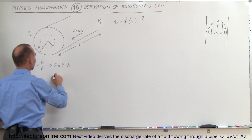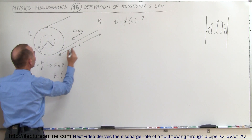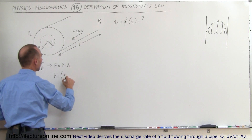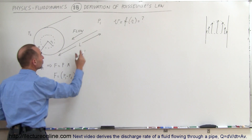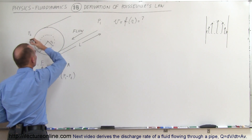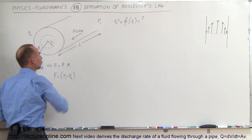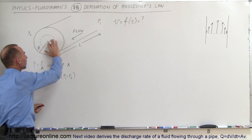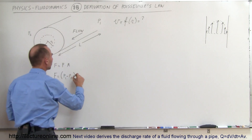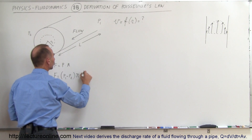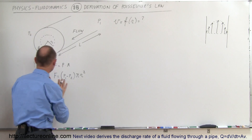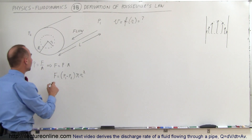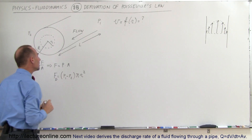We can say that the driving force is equal to the difference in the pressures, P1 minus P2 — because we assume P1 has higher pressure and P2 has lower pressure with the flow going in this direction — times the cross-sectional area of that portion of the fluid, which would be pi times r squared. So that's the driving force F sub d.